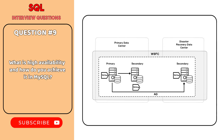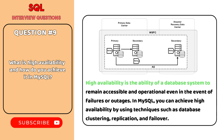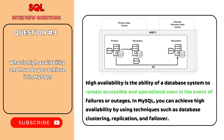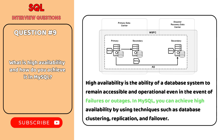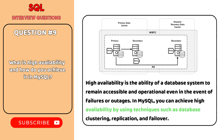What is high availability, and how do you achieve it in MySQL? High availability is the ability of a database system to remain accessible and operational, even in the event of failures or outages. In MySQL, you can achieve high availability by using techniques such as database clustering, replication, and failover.